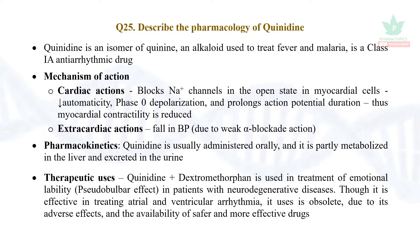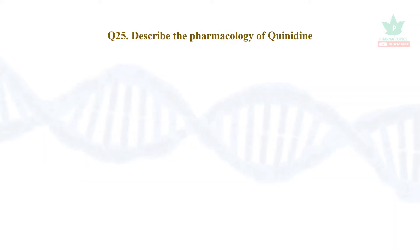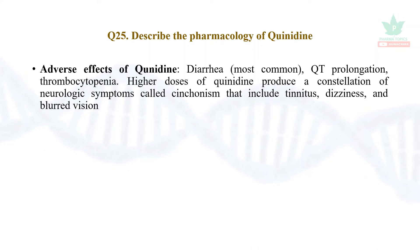Quinidine plus dextromethorphan is useful in treatment of emotional lability, that is pseudobulbar effect, which occurs in neurodegenerative diseases. It is effective in treating atrial and ventricular arrhythmias, but nowadays its use is obsolete because more effective and safer drugs are available. Adverse effects: diarrhea is most common; it causes QT prolongation, thrombocytopenia; higher doses can cause cinchonism — tinnitus, dizziness, and blurred vision.